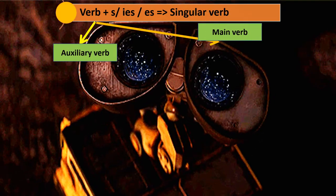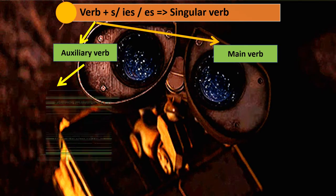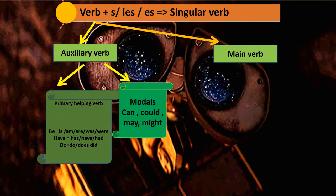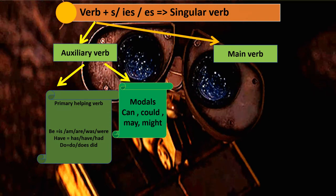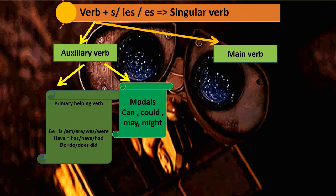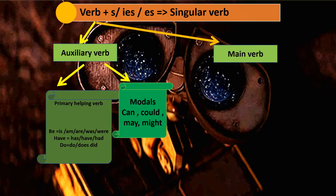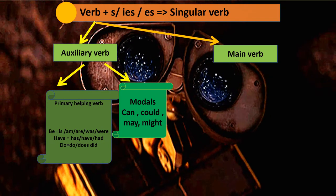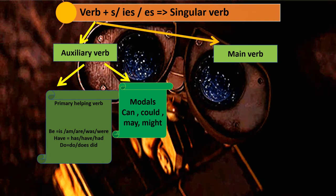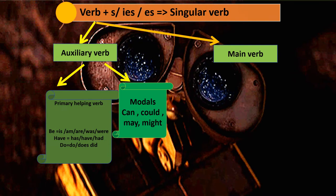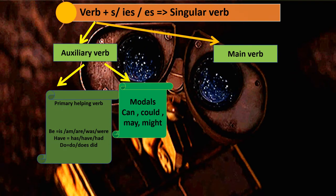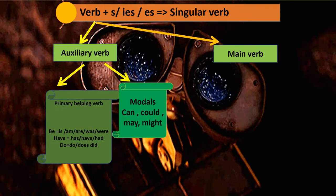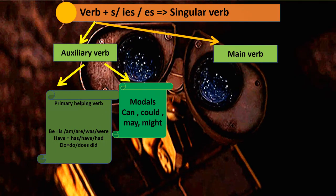Auxiliary verbs are also divided into two parts, so we should know what auxiliary verbs are. They are primary helping verbs and modal verbs, also known as primary verbs. Primary helping verbs include 'to be' verbs like is, am, are, was, and were — they help you in a sentence.